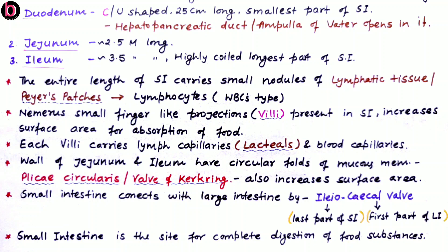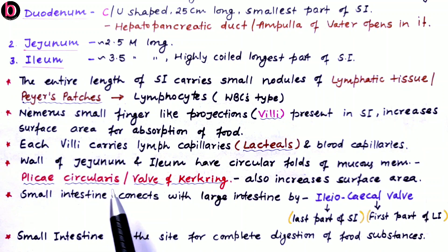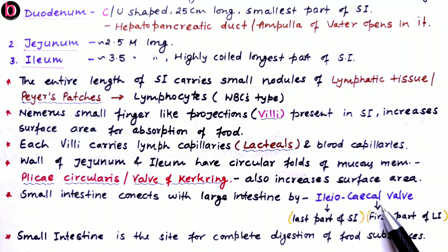The lacteal is for absorption of lipids or fats, while carbohydrates and proteins are directly absorbed by the blood capillaries; lipids are absorbed in the form of chylomicrons with the help of the lacteal. In the middle region (jejunum) and last region (ileum) of the small intestine, there are circular folds known as plicae circulares or valves of Kerckring, also for increasing surface area. The small intestine connects with the large intestine via the ileocecal valve or ileocecal junction. The function of the small intestine is to complete digestion of carbohydrates, proteins, nucleic acids, and lipids, as all relevant enzymes are secreted by the pancreas and small intestine.